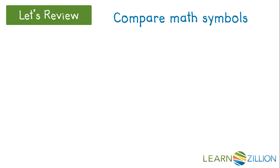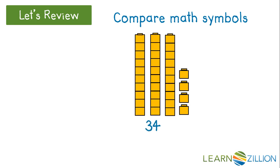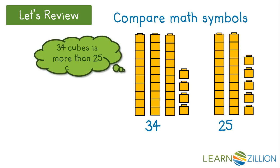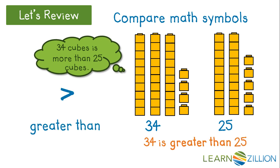Let's review our compare math symbols. 34 cubes—3 towers of 10 and 4 cubes—and we have 2 towers of 10 and 5 cubes. 34 cubes is more than 25 cubes. 34 is greater than 25. This is a symbol to show greater than or more than.